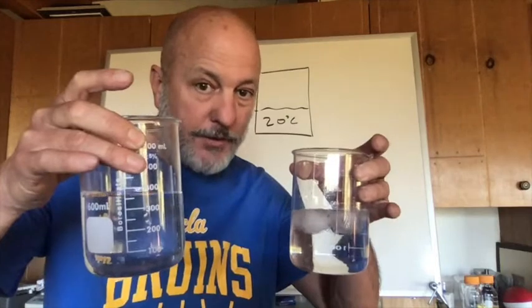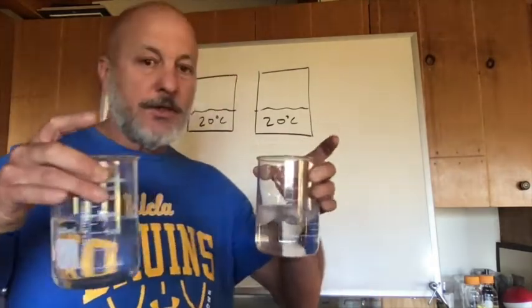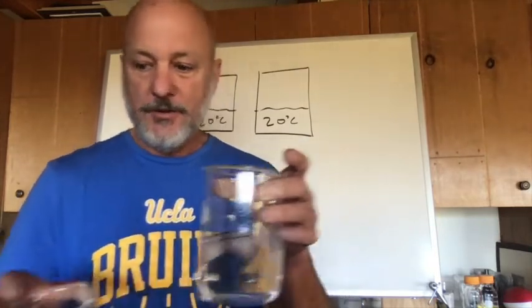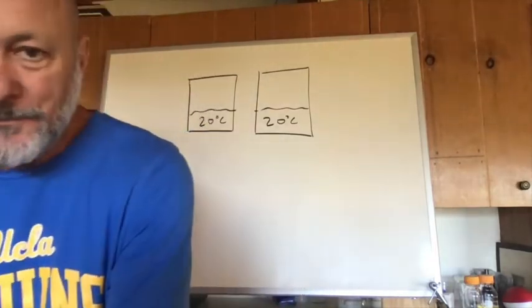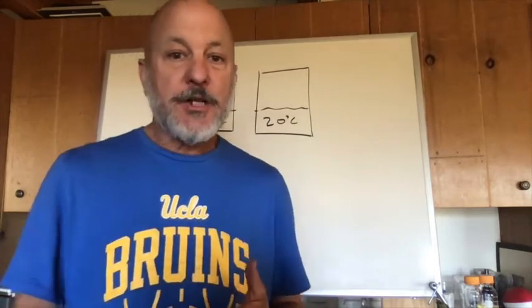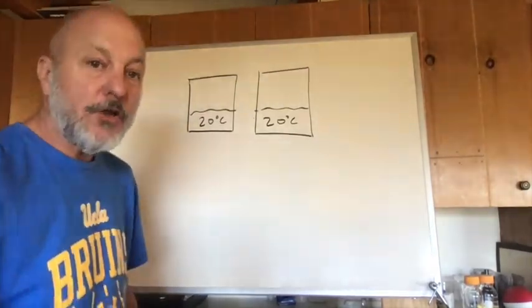I added zero degrees C water to one beaker, and zero degrees C ice — solid water — to the other. In the one with cold water, it's just a combination of cold and hot water, which will lower the temperature below 20. But we're going to see something different happen in the ice water because the ice has got to do two things: yes, it's cold, but also it's going to melt, and that's going to make a difference. Let's set these aside and give them a little bit of time, then check the temperature.